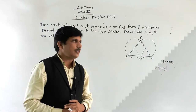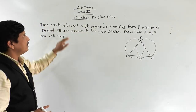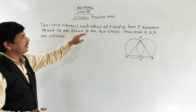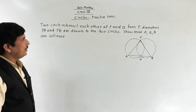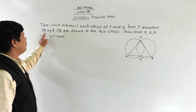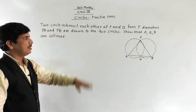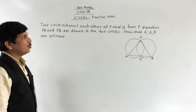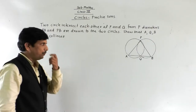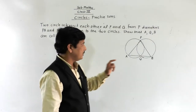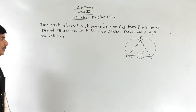The second problem: Two circles intersect each other at P and Q. From P, diameters PA and PB are drawn to the two circles. We need to show that A, Q, and B are collinear.